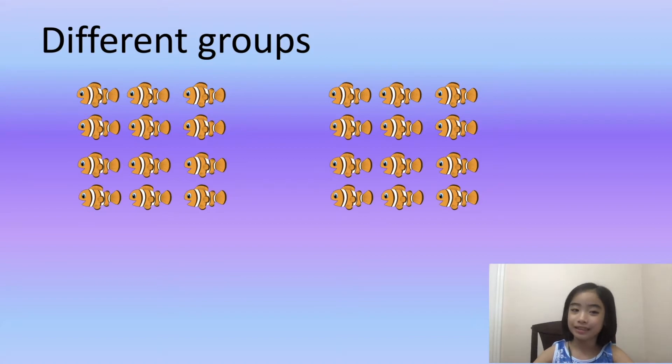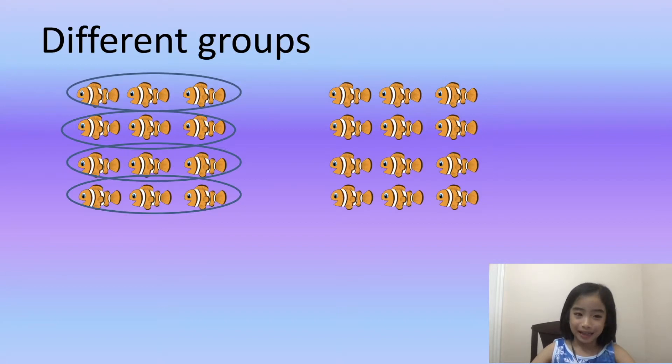Here, I have twelve fish. I can split them into four groups, each with three fishes. I have four groups of threes, which equals three plus three plus three plus three equals twelve.